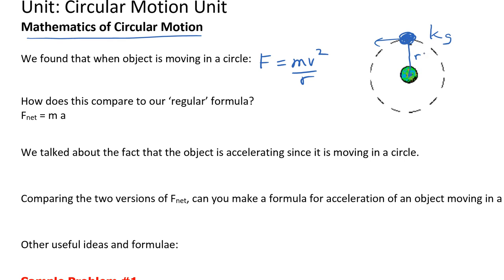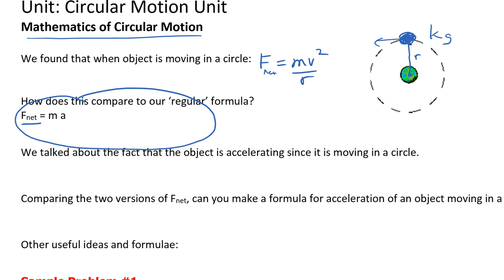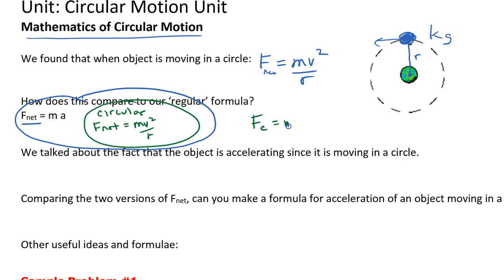How does this compare with our regular formula F_net equals ma? This F_net equals ma applies to all types of motion. For circular motion specifically, we have F_net equal to mv squared over r. Some textbooks write this as F_c equals mv squared over r — that's the same thing; F_c just indicates it's a centripetal or circular force.